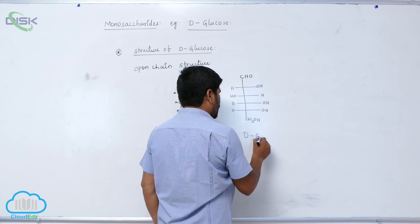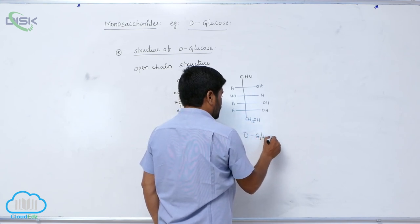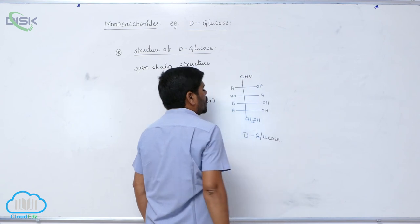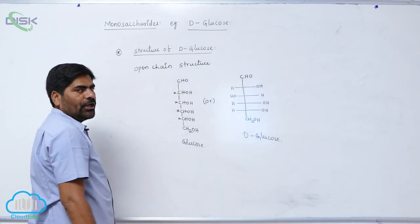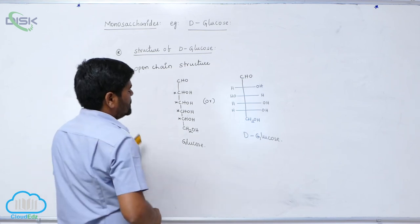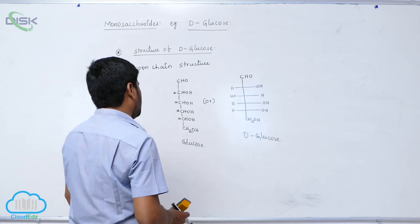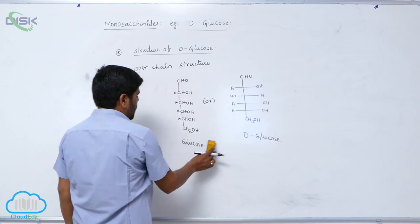known as what? D-glucose. This is the open chain structure of D-glucose molecule.